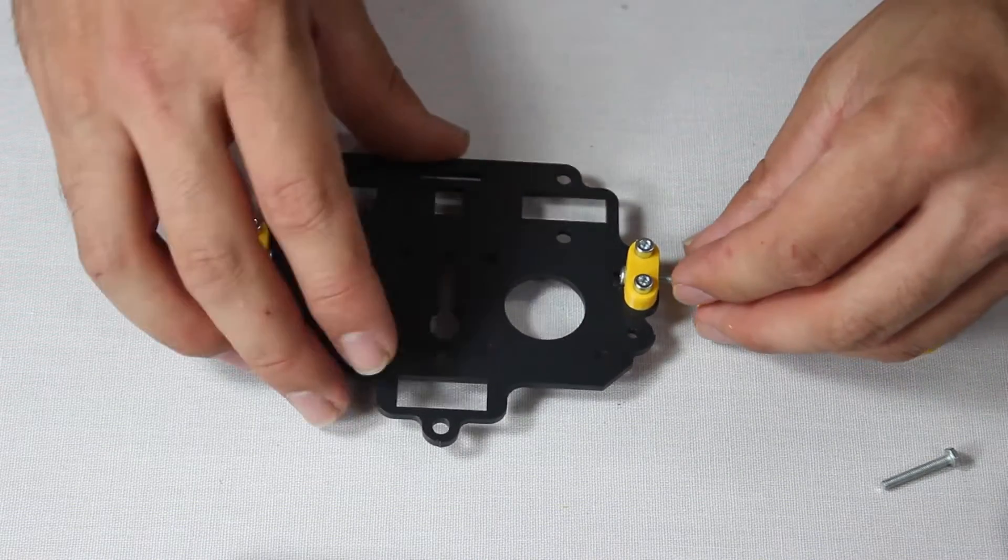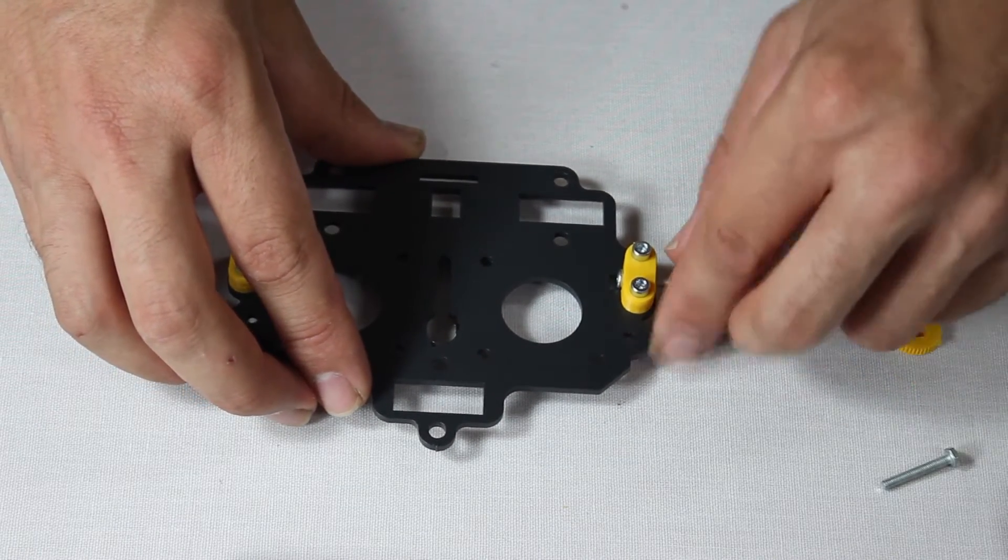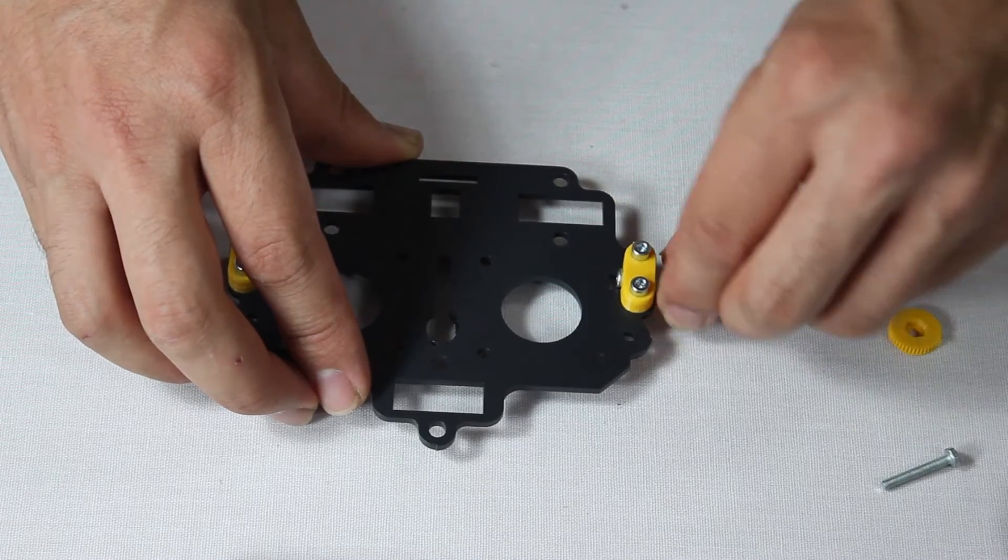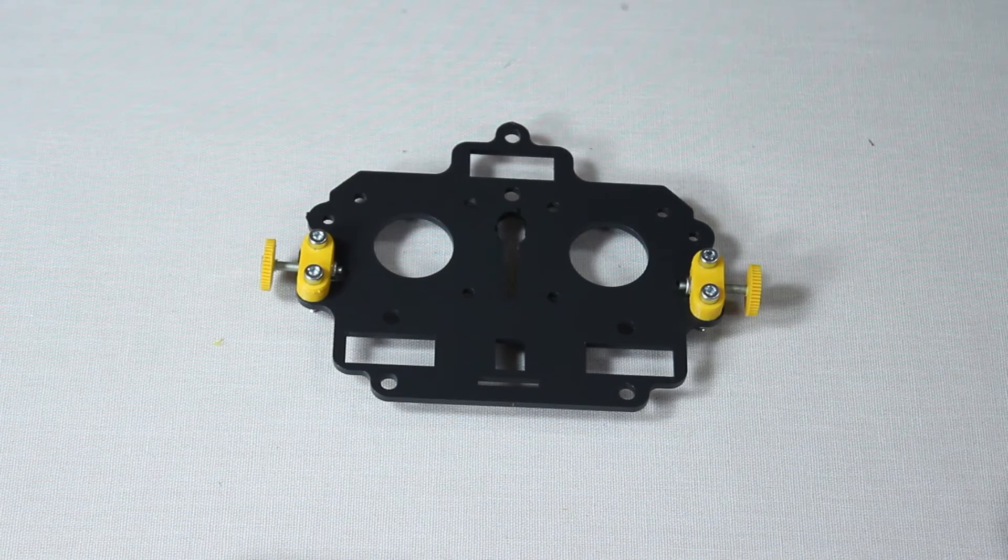Next, screw the bolts with the cogs into the nuts you placed in the printed parts earlier on. There's no need to use tools, you can do it with your fingers. Screw in until the tip of the bolt thread appears, as you see here.